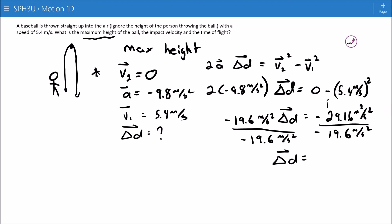So 29.16 divided by 19.6, it's going to go to a height of 1.5 meters. And here we do have a positive and that makes sense because we're talking about this displacement right here where the ball has gone up. So it's gone up 1.5 meters.